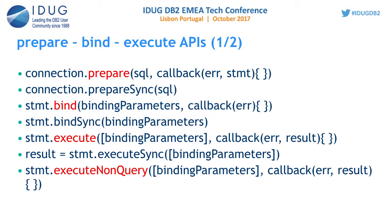If you want to run a query that does not return a result, we have the executeNonQuery API. It is slightly faster than the other execute APIs because it knows no result needs to be returned. One more benefit of executeNonQuery is that it returns the number of affected rows — for example, if you inserted five rows or an update affected N rows, it returns that count as the result.